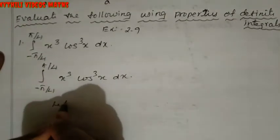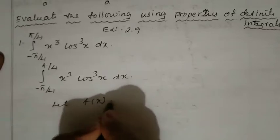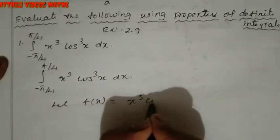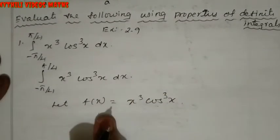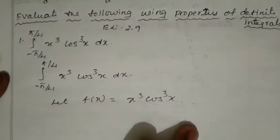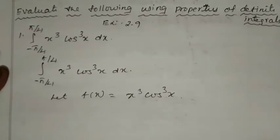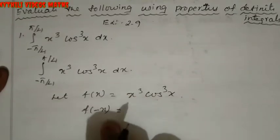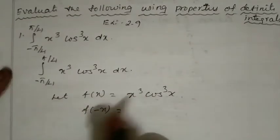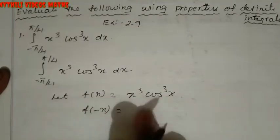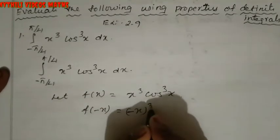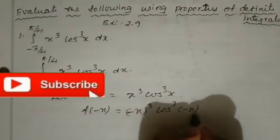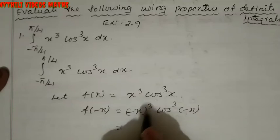Let f(x) equal to x³ cos³x. Now substitute minus x: we get f(minus x) equals (minus x)³ times cos³(minus x).